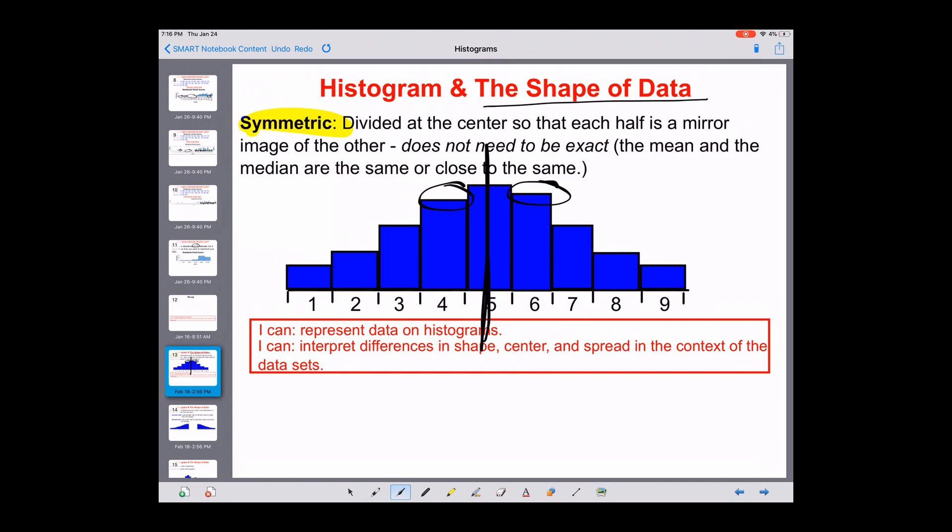Some key points to symmetric data is that the mean and the median are going to be the same or at least really close to being the same. It's not very often that happens, but with symmetrical data it does happen.